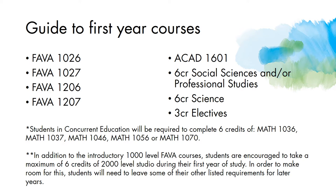You'll also see an asterisk with some information for students in concurrent education. If this is something you are planning for, you are required to take six credits of math from the list provided. This will satisfy your required six credits of science breadth requirements.